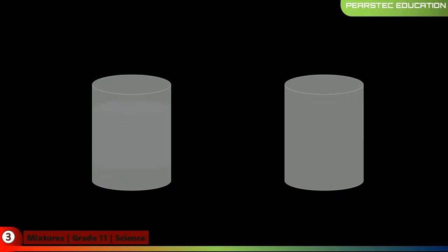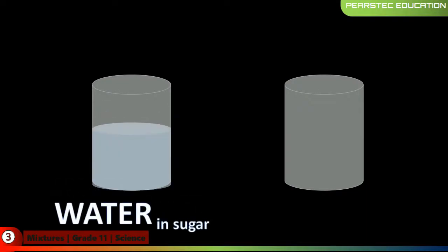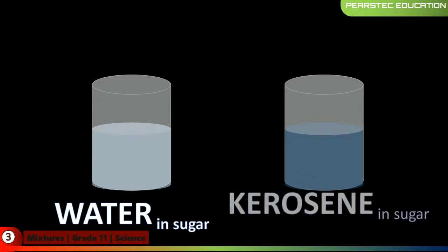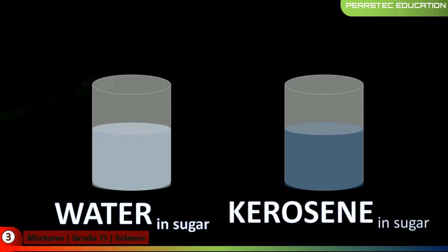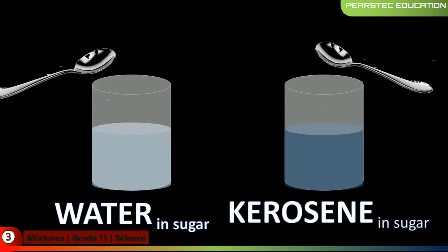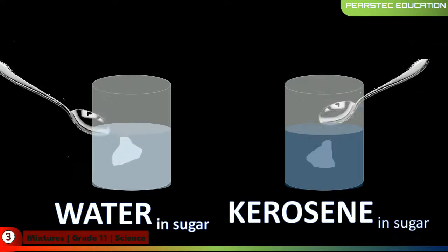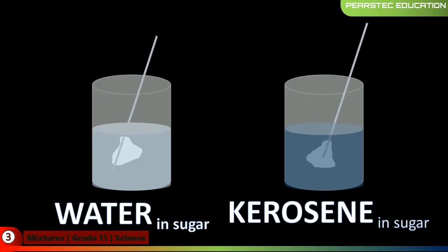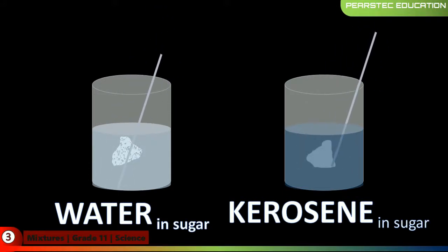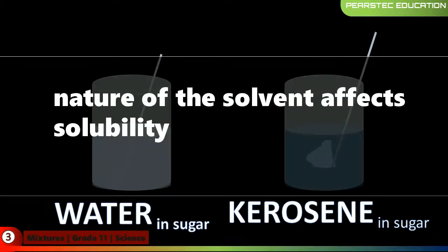In our third experiment, we are taking water with sugar on the left side, and kerosene with sugar on the right side. We are taking equal amounts of sugar and trying to dissolve it in water and kerosene. After stirring, water dissolves sugar faster while kerosene is slower. That shows the nature of the solvent also affects solubility.